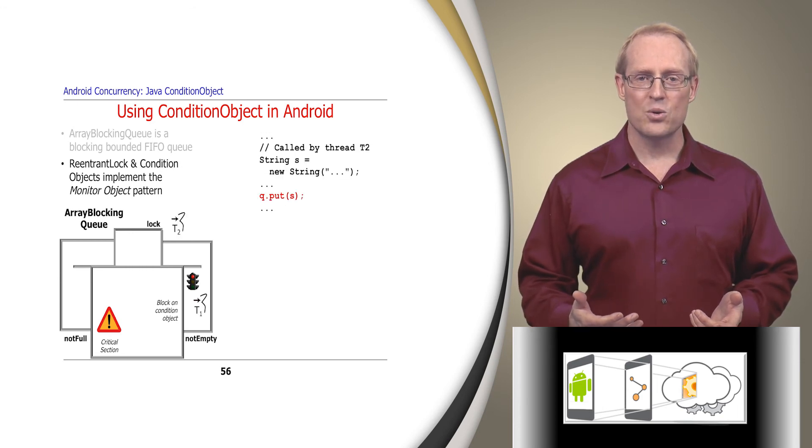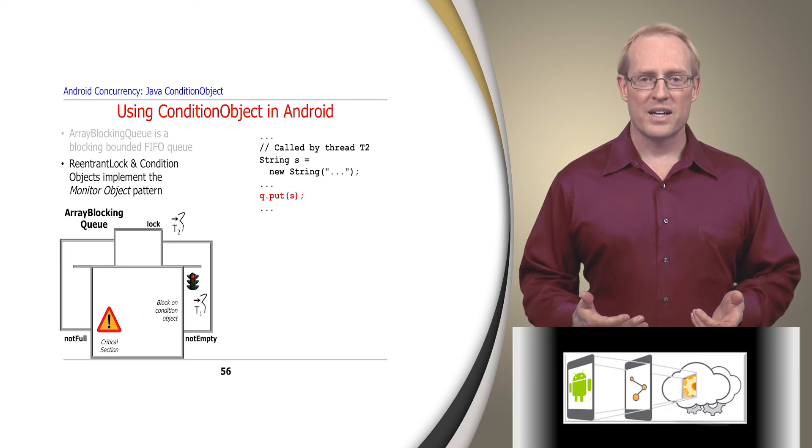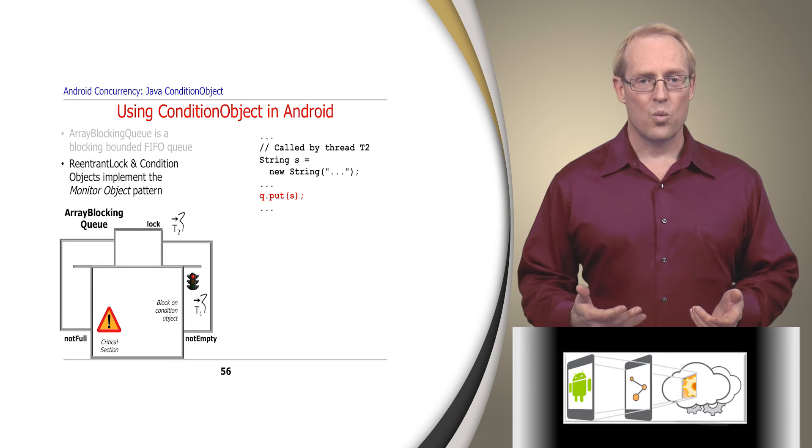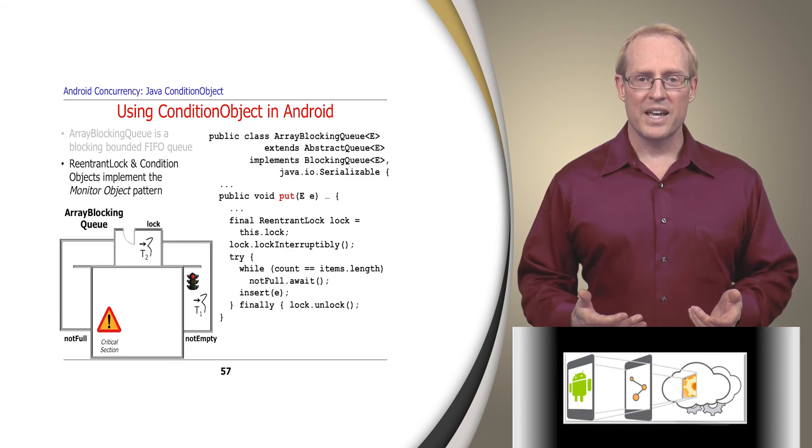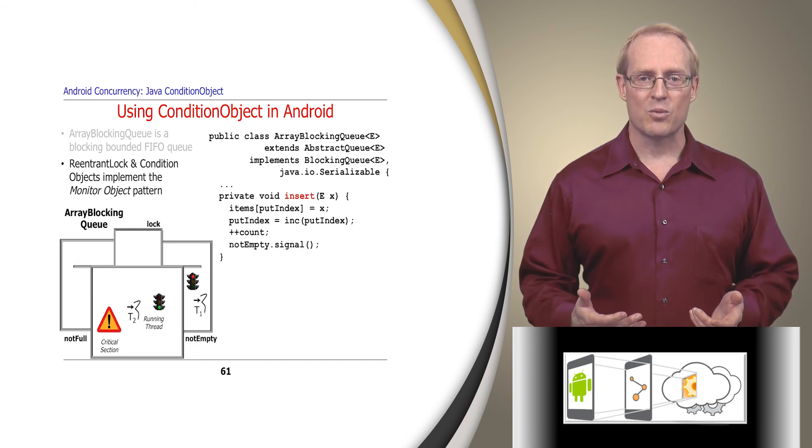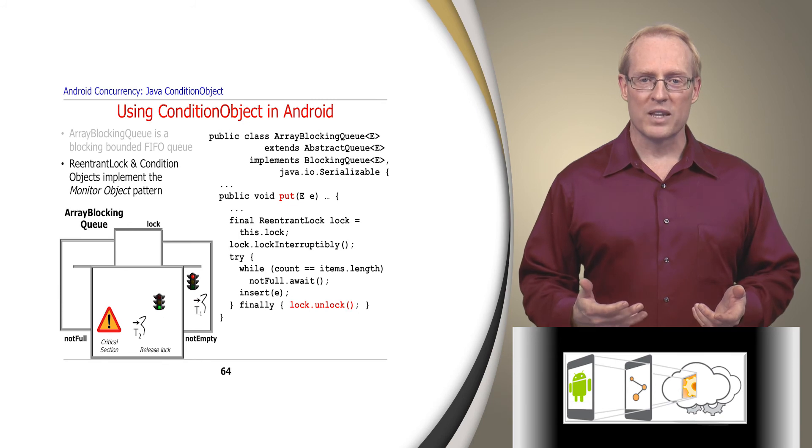Assume now that a second thread, T2, creates a new string and calls put on the array-blocking-queue. Since T1 released the lock when it went to sleep on the not empty condition object, when thread T2 calls put, it acquires the lock and runs in the monitor object, where it determines the queue isn't full and thus will call insert, which adds the new element to the tail of the items array and signals the not empty condition object to indicate that the queue is no longer empty. When insert returns, the put method releases the lock and leaves the monitor's critical section.